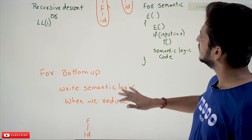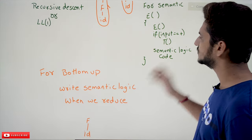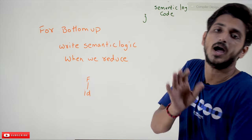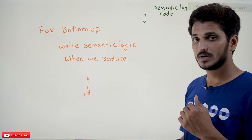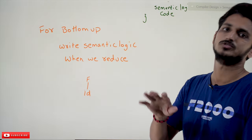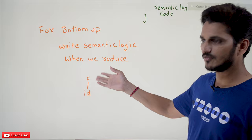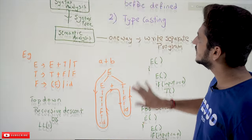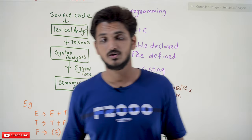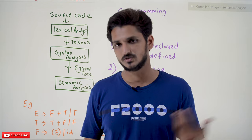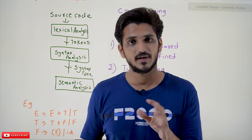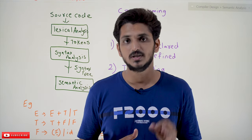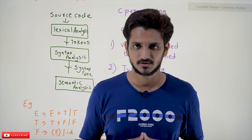In the top-down approach you can write semantic conditions, and you can do the same in the bottom-up approach as well. In bottom-up parsing we perform reduce actions rather than expanding. During the reduce action, you can write whatever semantic logic you want. This is the basic understanding for semantic analysis. In our next class we will discuss in-depth understanding about semantic analysis. If you have any questions, please post them in the comment section below. Thanks for watching — please subscribe to our channel and press the bell icon for the latest updates.